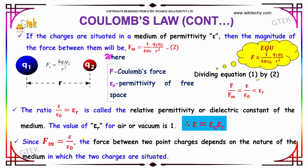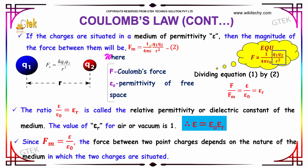Now we divide equation 1 by equation 2. Equation 1 is F equal to 1 divided by 4 pi epsilon 0 into Q1 into Q2 divided by R square, and equation 2 is Fm equal to 1 divided by 4 pi epsilon into Q1 into Q2 divided by R square. On dividing, the 1 over 4 pi terms cancel, as do Q1 Q2 over R square, leaving only epsilon 0 and epsilon. So F divided by Fm equals epsilon divided by epsilon 0.